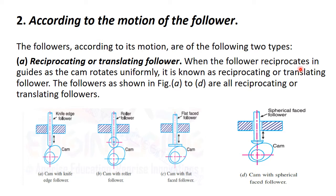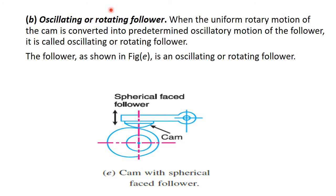When the follower reciprocates in the guide as the cam rotates uniformly, it is known as reciprocating or translating follower. Followers are shown in figure A to D. All are comes into category of reciprocating or translating follower. Here you can see that line of action of cam and follower is same in all diagrams. When cam rotates either clockwise or anticlockwise, in all cases, you observe that follower moves up and down. It means it moves translating or reciprocating and develop thrust on sides. There is no motion of follower is oscillating or rotating.